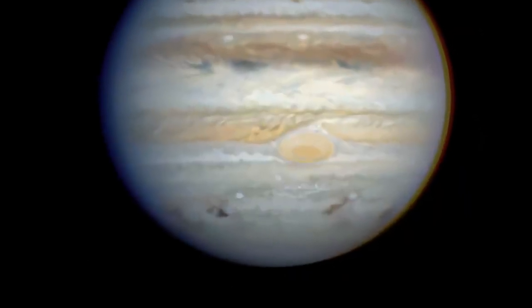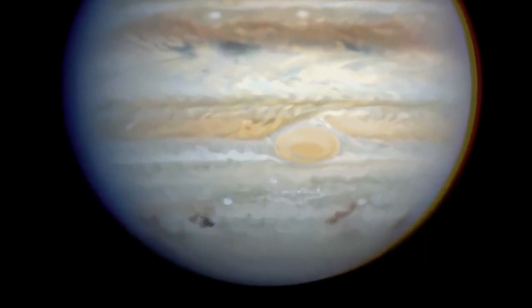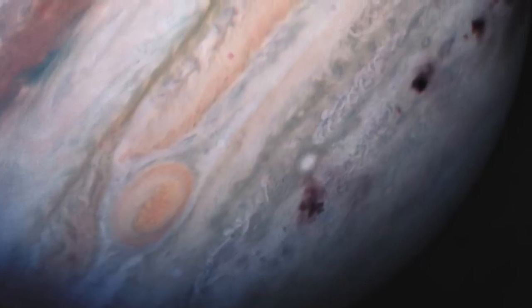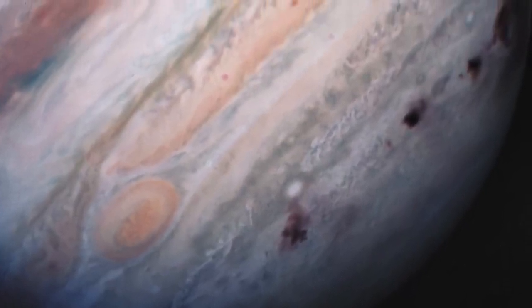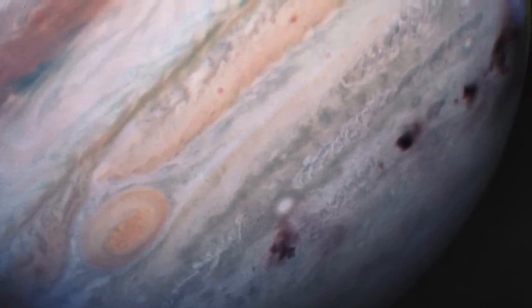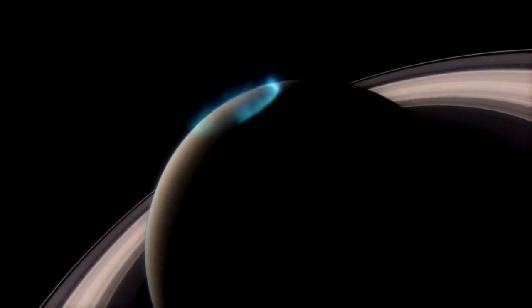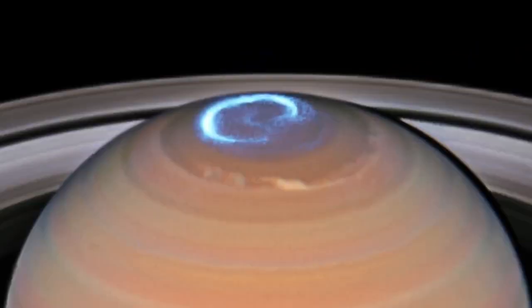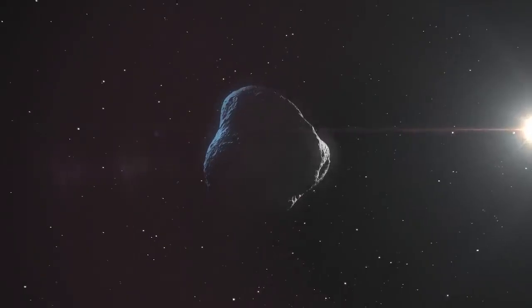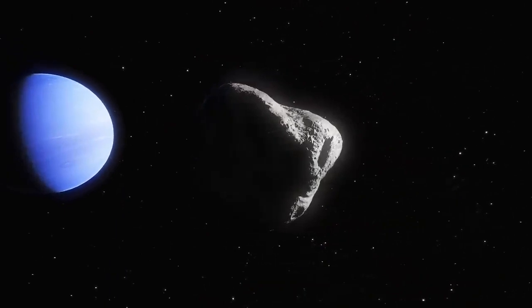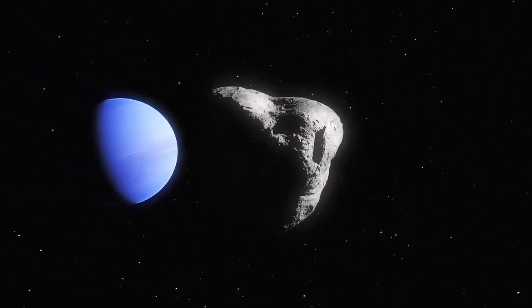Hubble has also observed the auroras on several of our solar system's planets, including Saturn and Uranus. The telescope's data were also used to study the origin of the smallest known moon orbiting the planet Neptune, known as Hippocamp.